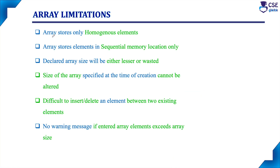The first limitation is that an array stores only homogeneous elements. For example, if you have declared the array int a of 10, all 10 elements will be of integer data type only. We cannot store five elements of integer data type and five elements of floating point data type — that is not possible. If you have declared float a of 10, all 10 elements will be of floating point data type only. So array stores only homogeneous elements; heterogeneous elements are not possible in arrays. That is the first limitation.